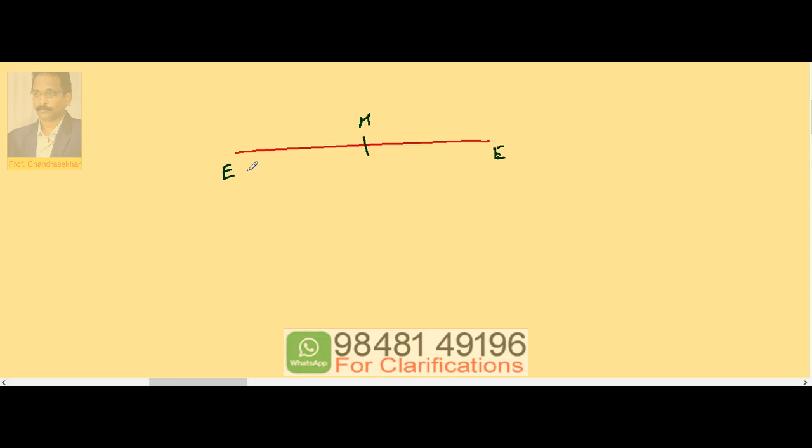Let us take the particle on a line. This is the midpoint. This is extreme. This is also extreme. Here time is given from this point to this point. It is pi seconds.